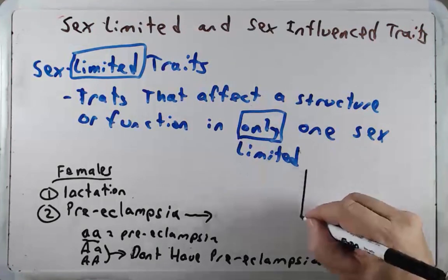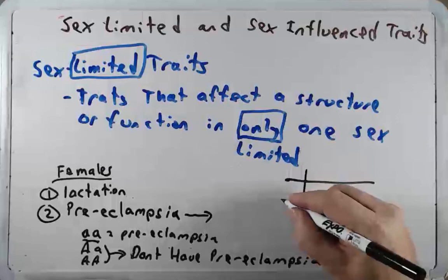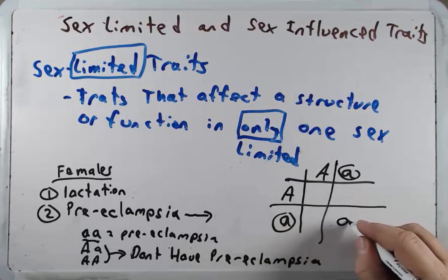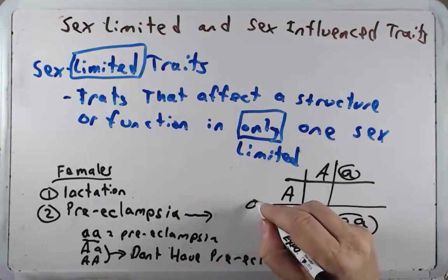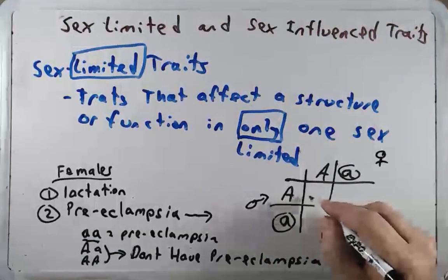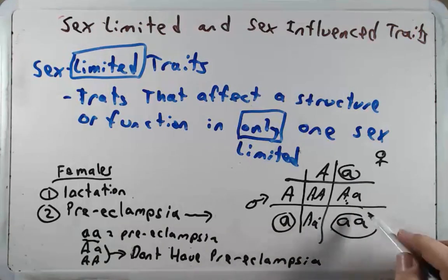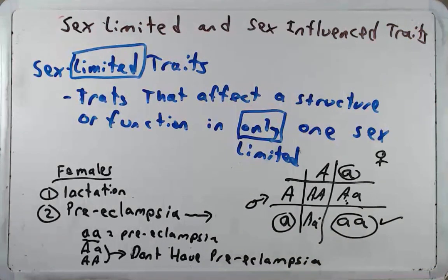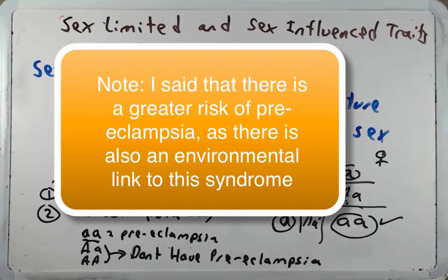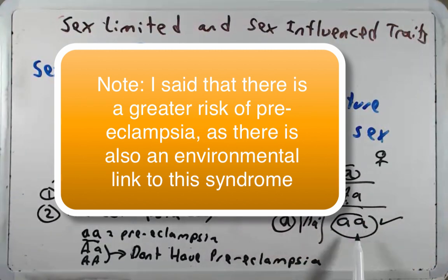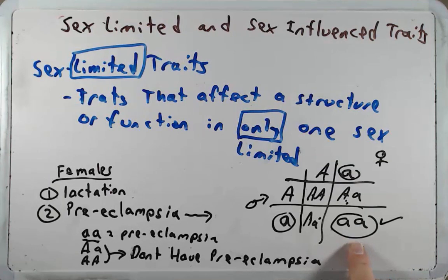If we think of this person's parents, at least one little a from each parent has to be donated to make this child. If this is dad and this is mom, one child here would be unaffected, two would be unaffected but carriers, and the daughter who is little a little a when she grows up would be at greater risk of developing preeclampsia. While men don't have the trait, they can certainly carry the mutation and pass it on to their daughters.